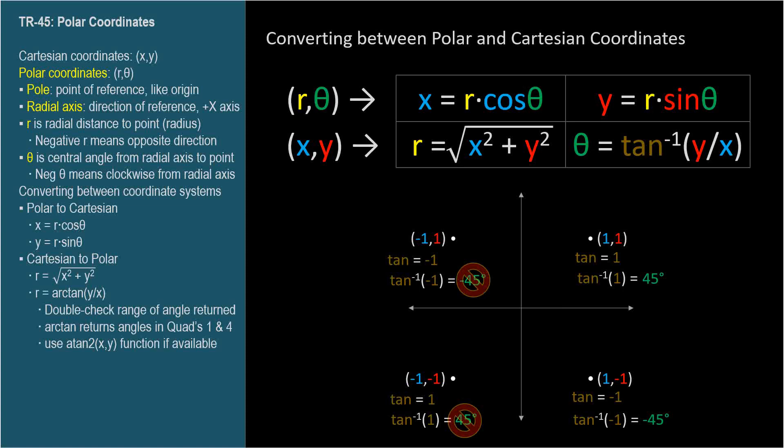When converting Cartesian coordinates to polar form, if you have the coordinates of a point in quadrant 2 or 3, the arc tangent function will be off by π radians, or 180 degrees. So add or subtract π radians, or 180 degrees, to get the actual angle. We'll work through some sample problems in TR-45x.